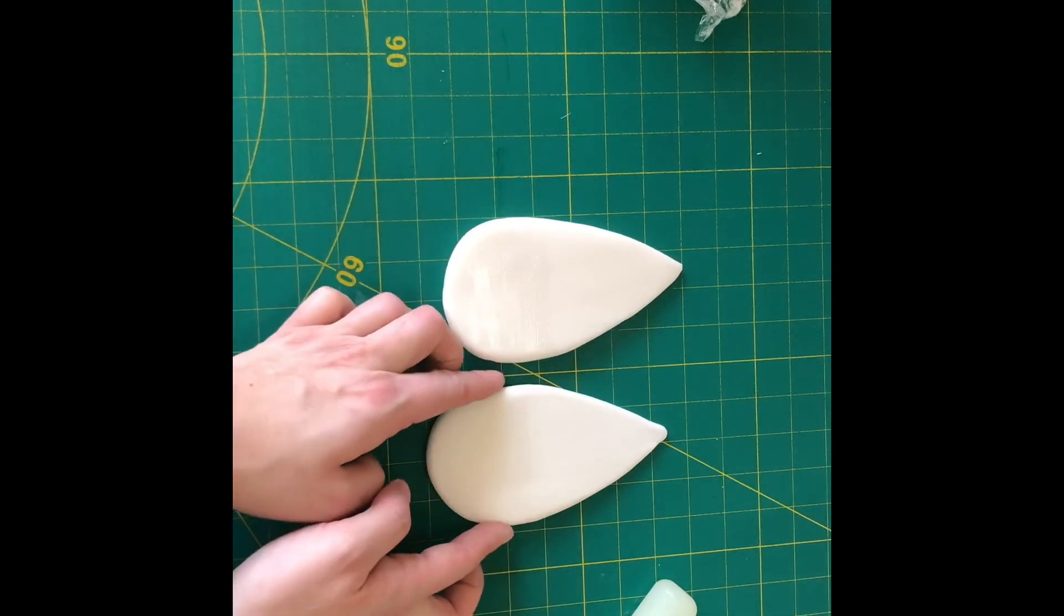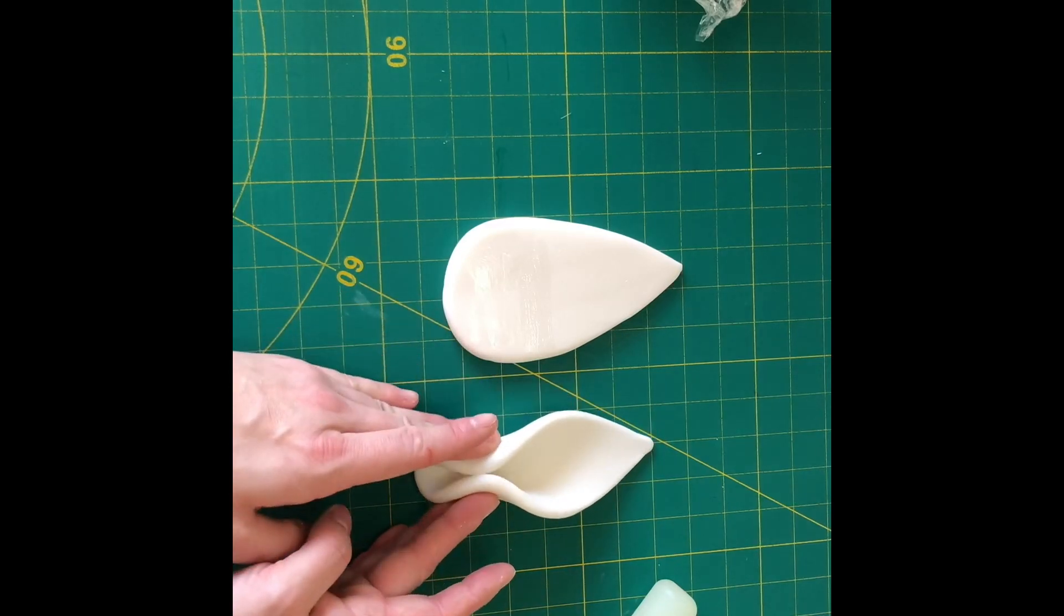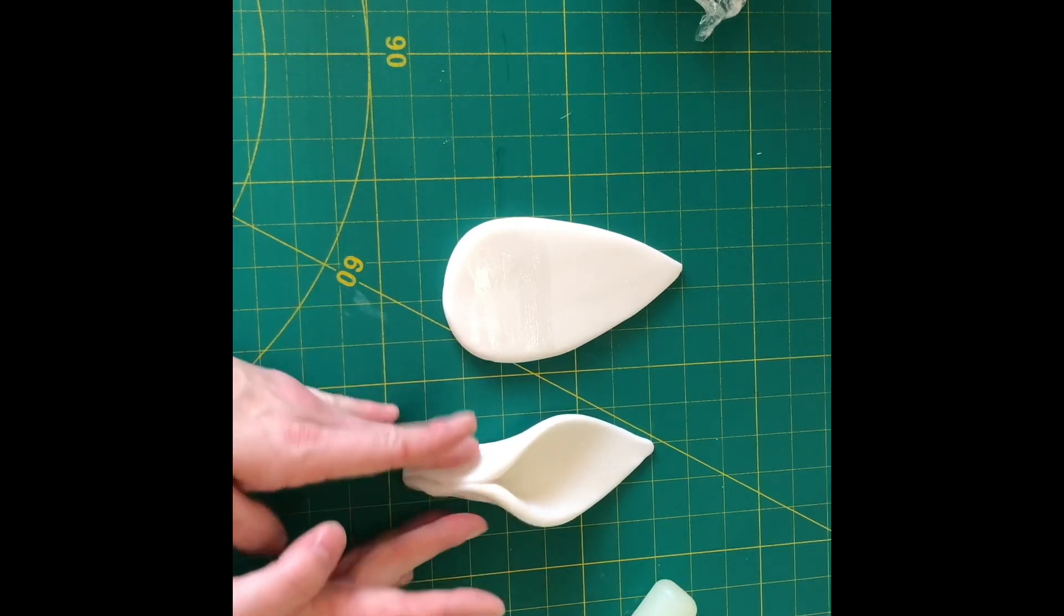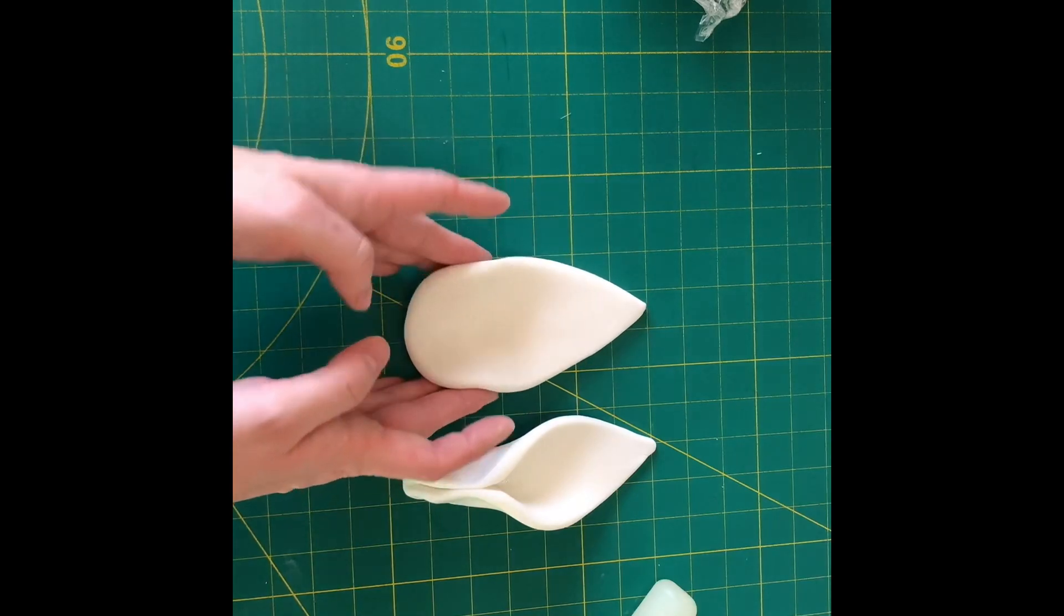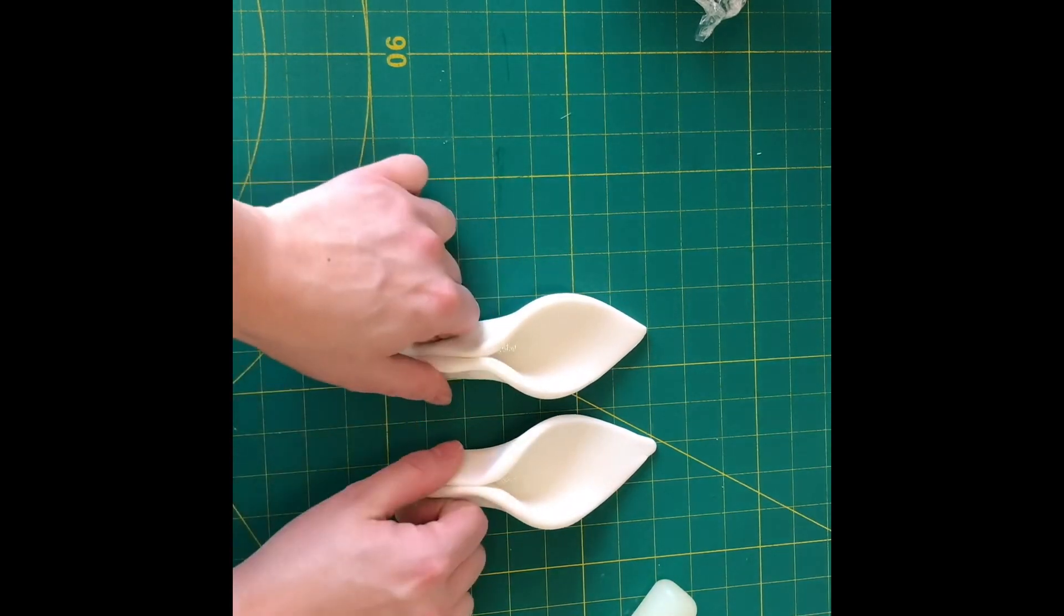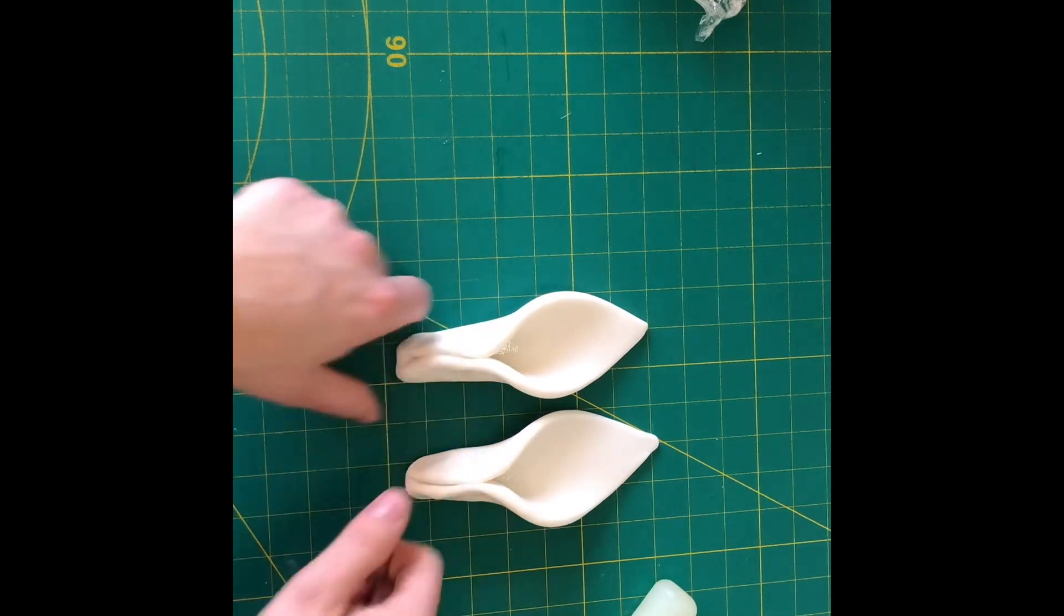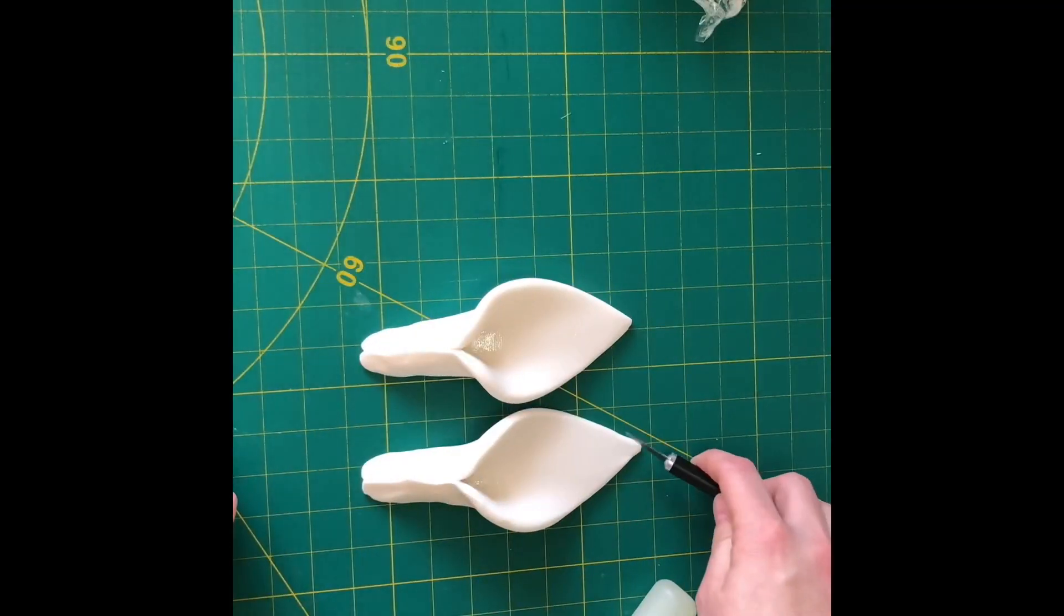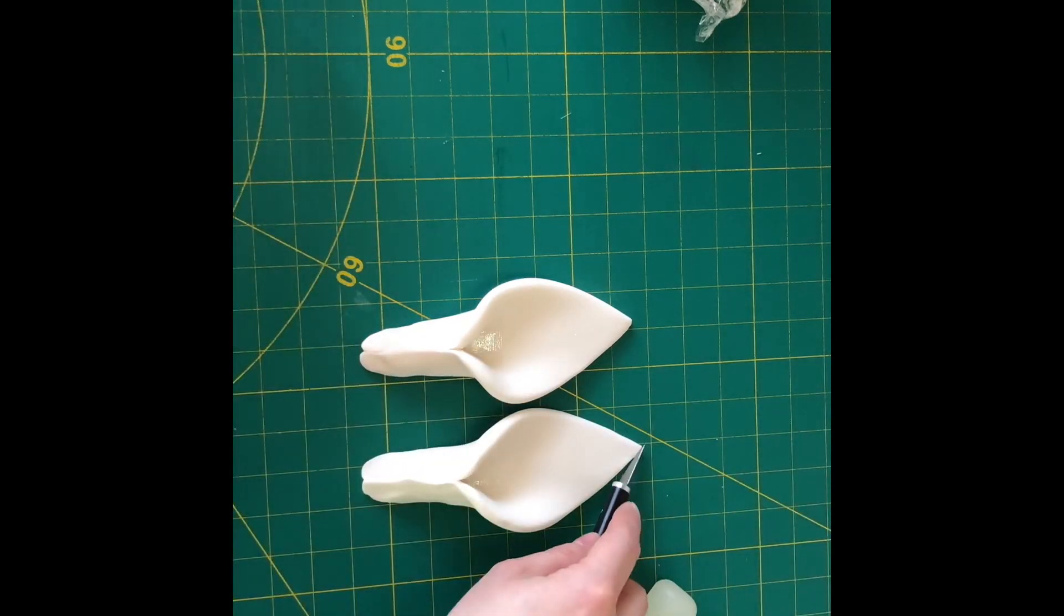And then now it's just a case of pinching them closed. It's good to have them side by side because in this way at least you're making them very similar size. At this point, then you can just use your knife and trim up.